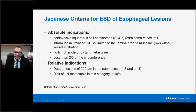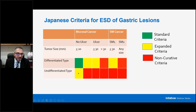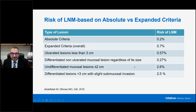To summarize gastric ESD criteria: the absolute best indication is a non-ulcerated, differentiated tumor less than 2 cm. You can push to 3 cm if differentiated; you can accept ulcers if the lesion is small; undifferentiated tumors less than 2 cm may be removed. SM1 invasion carries slightly higher lymph node risk, and there is emerging data that undifferentiated type tumors, regardless of size, cannot be considered favorable. Always discuss these risks with your patient, involving surgeons and oncologists in the decision.